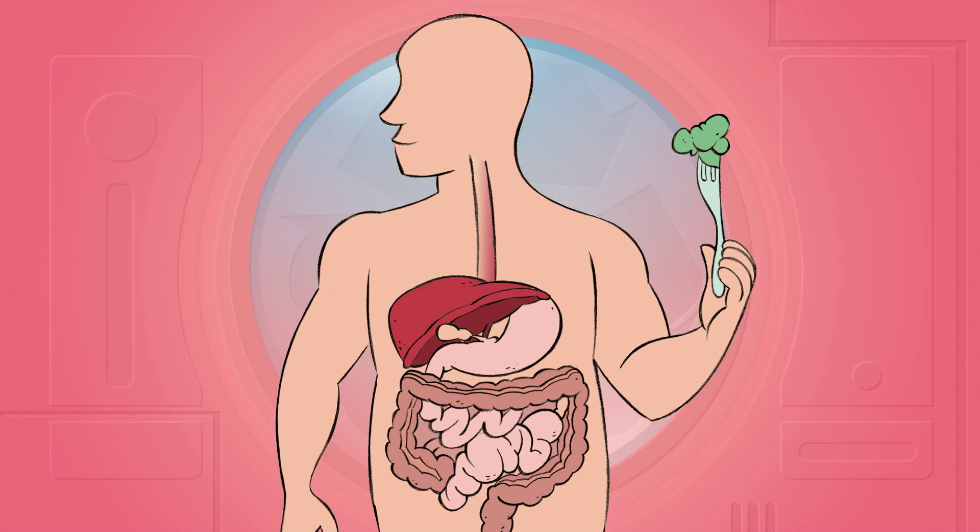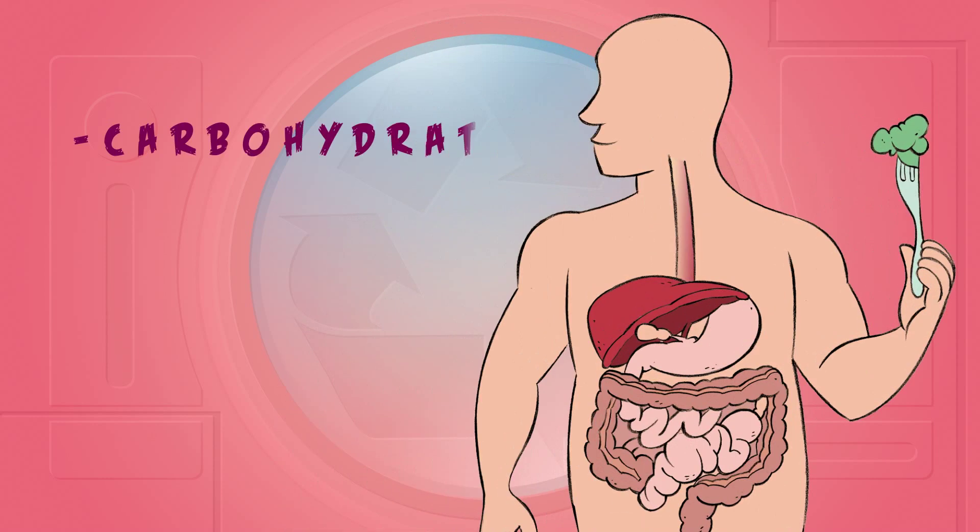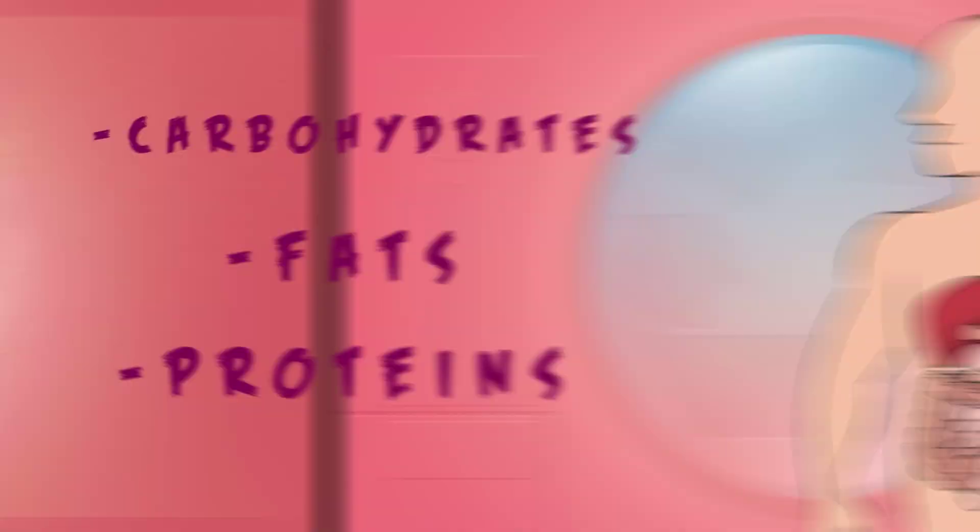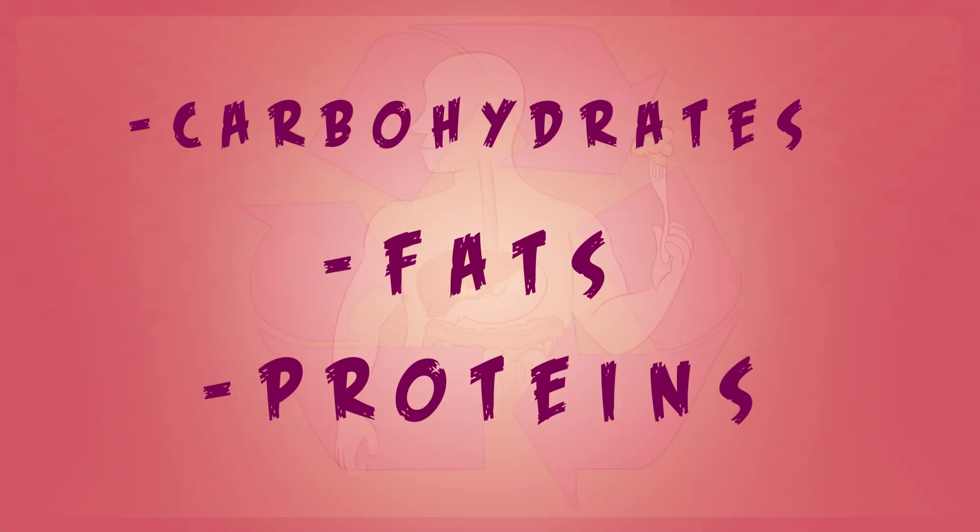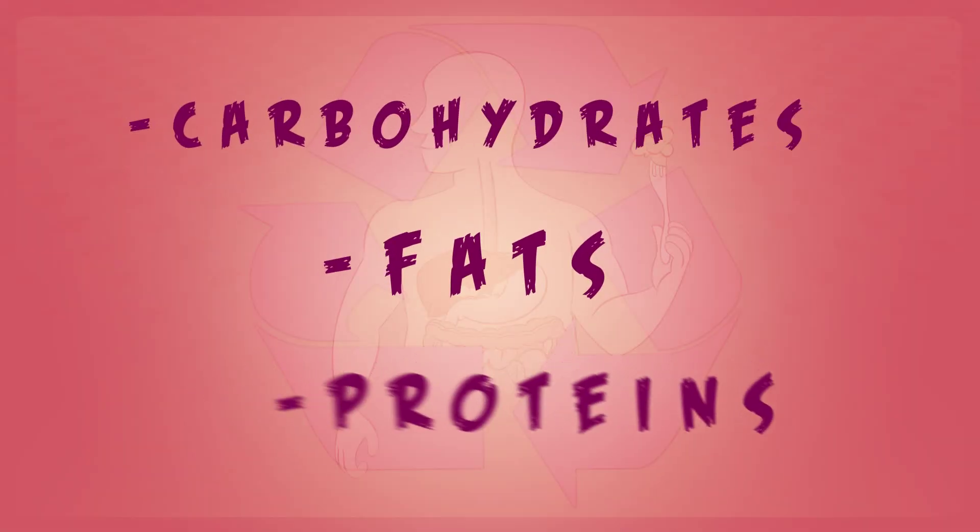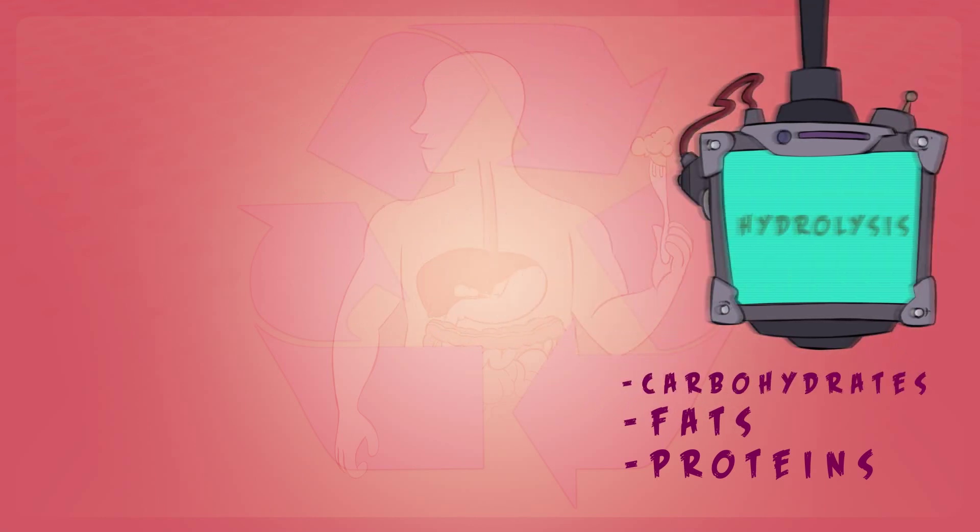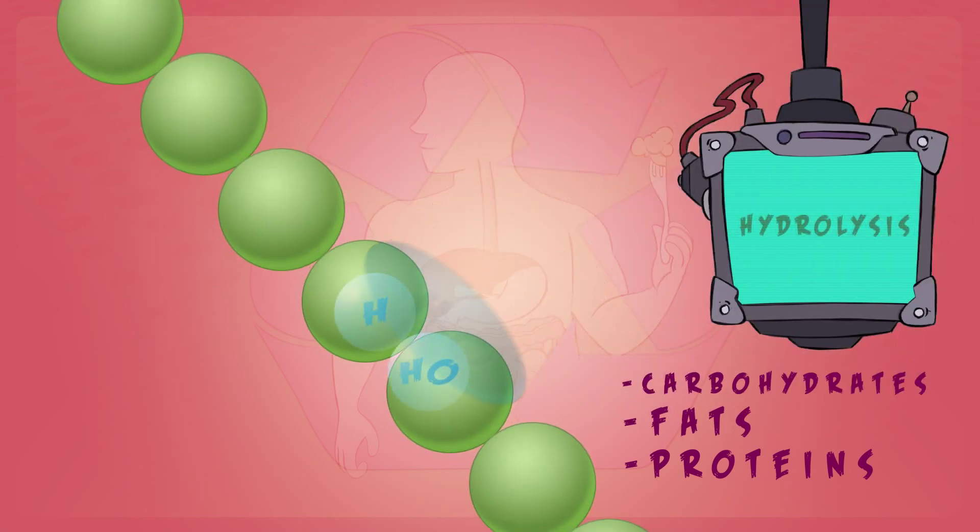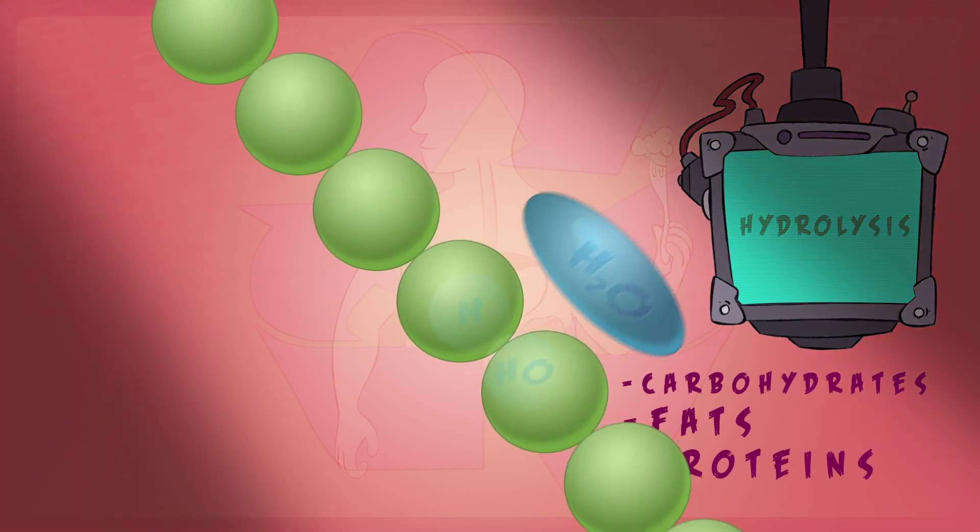Our body relies on three major types of food: carbohydrates or carbs, fats, and proteins. During digestion, these three types of food are broken down by the same type of chemical reaction called hydrolysis. Hydrolysis is the breakdown of a compound when it reacts with water. Let's see how each type of food is broken down.